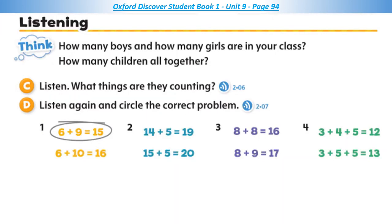Communicate. Listening. What things are they counting? 1. I have six pens. You have nine pens. How many pens do we have? 2. Our teacher has 15 rulers. We have five rulers. How many do we have together? 3. The girls have eight pencils. The boys have nine pencils. How many pencils do they have together? 4. May has three erasers. John has four and Ava has five. How many erasers do they have?